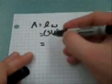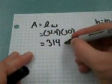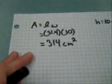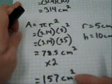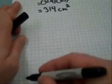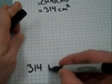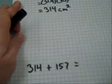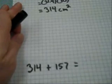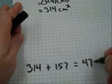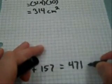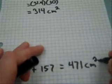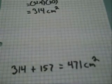And now we can multiply. We end up with 314 centimeters squared. We then take that answer and this answer and add them: 314 plus 157. And we get 471. Remember that we are doing surface area, therefore it must be squared. And we're dealing with centimeters, so this is 471 centimeters squared. And that is a reminder of how to calculate the surface area of a cylinder.